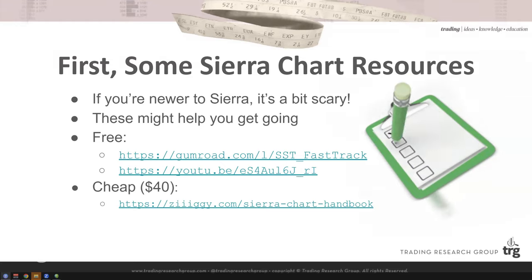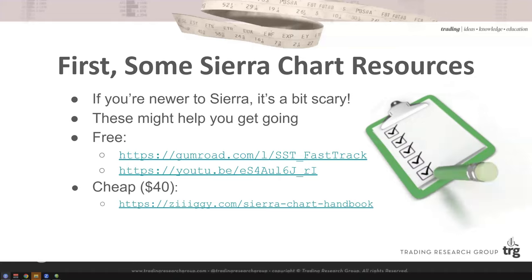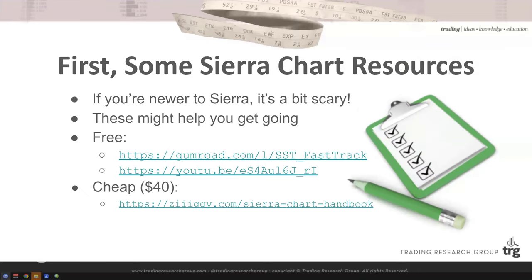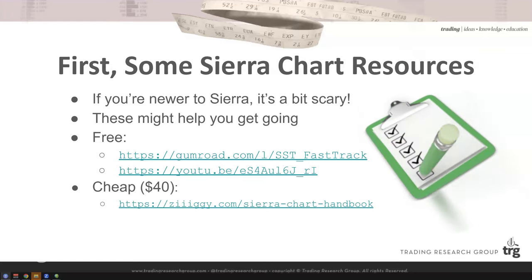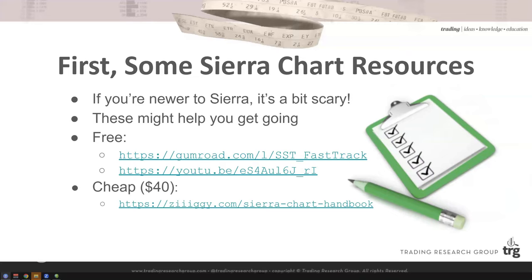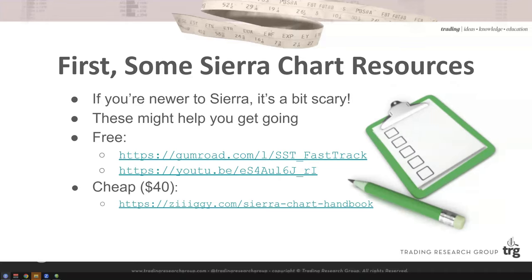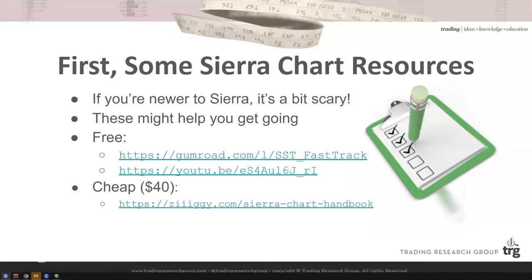The first resource is the Fast Track Guide from Frederick over at Simple System Trading — it's a free PDF and a really good introduction to Sierra Chart, getting you started from zero on the basics. The second is a YouTube playlist that's actually pretty current; there's a lot of really old, outdated Sierra Chart content on YouTube, but this one is recent. The third is not free — it's a Sierra Chart handbook by someone who goes by Ziggy, 'Ziggy's on the Bid' on Twitter. It's about $40, really well put together. I've spoken to a number of people who've bought it and they all say it's really, really good.